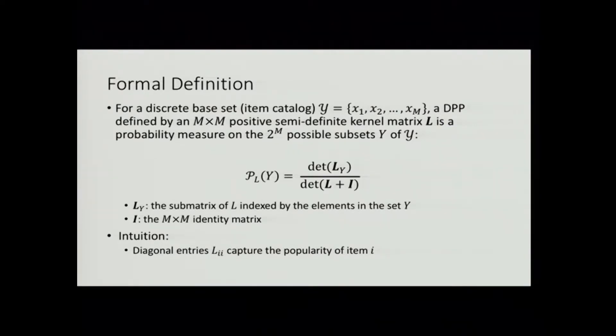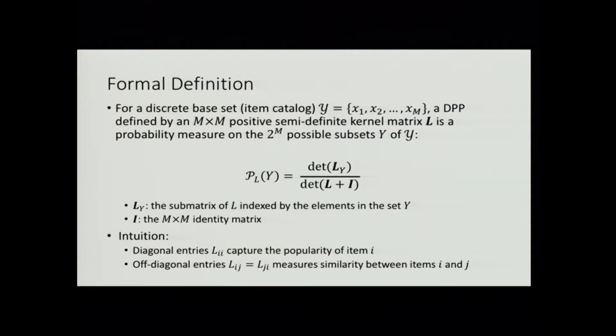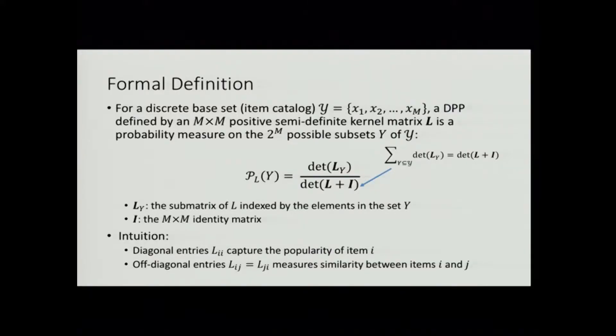One way to interpret the parameters of the kernel matrix is that the diagonal entries capture item popularity, and the off-diagonal entries measure something about the similarity between two items. The normalization constant comes from the fact that if we iterate over all possible subsets, the sum of determinants can be expressed in closed form as the determinant of L plus I.